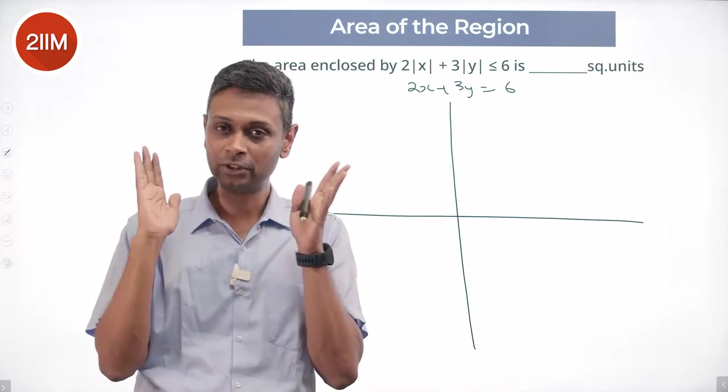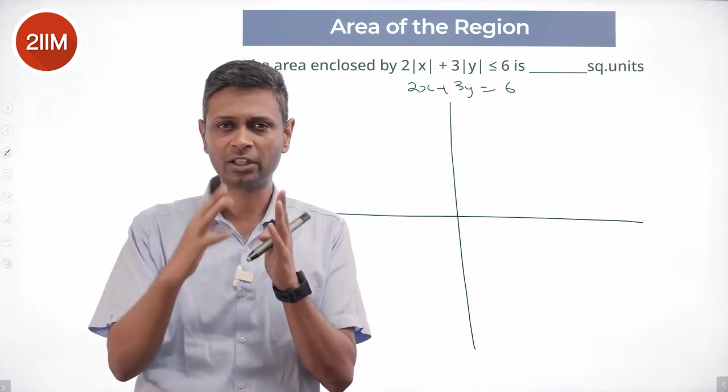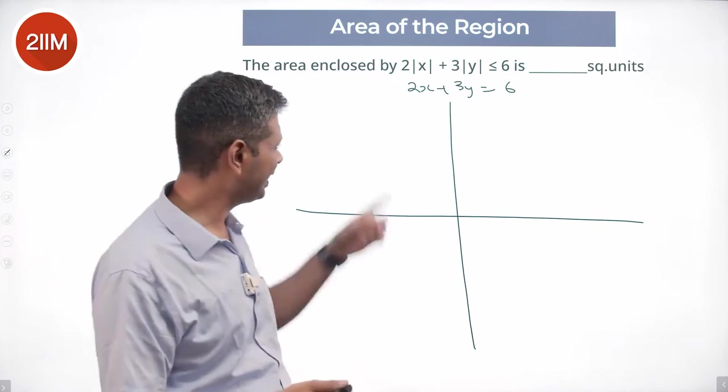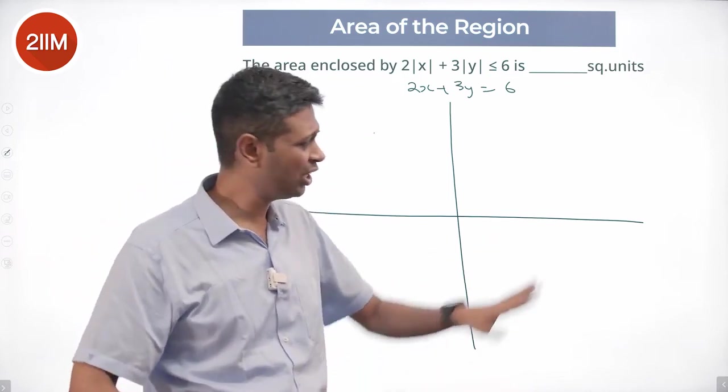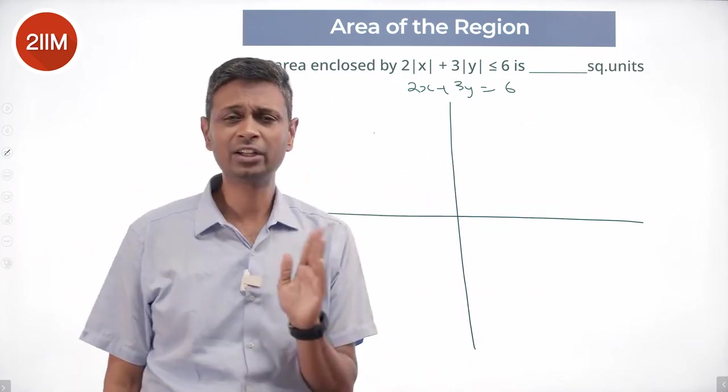When x is positive, x equals mod x, and y is positive, y equals mod y. So I'm going to forget these three quadrants and deal only with this quadrant, then think about 2x plus 3y equals 6.